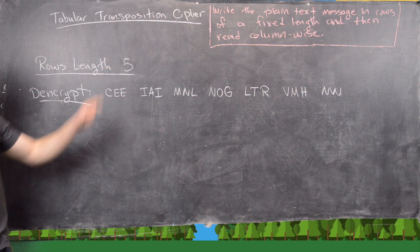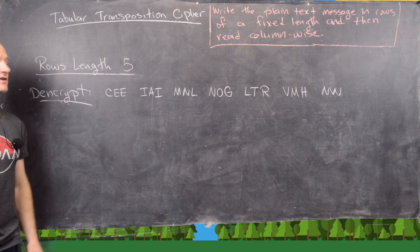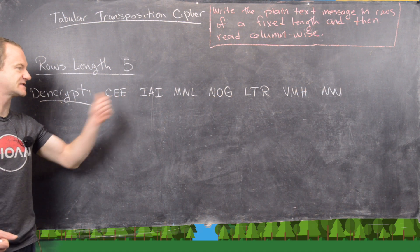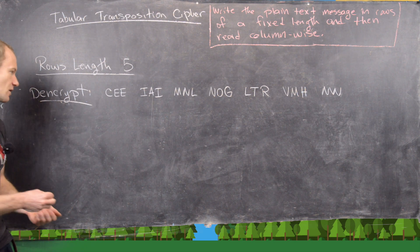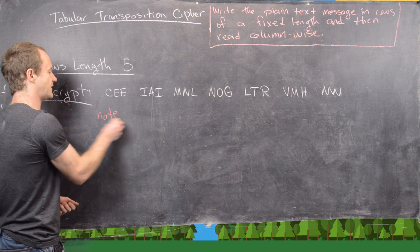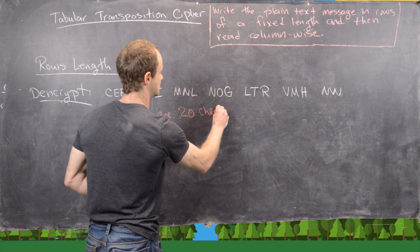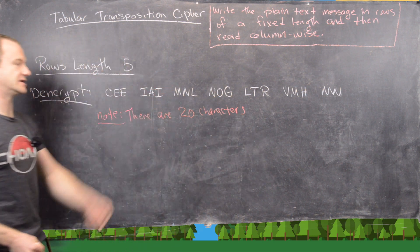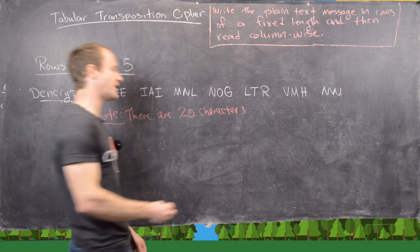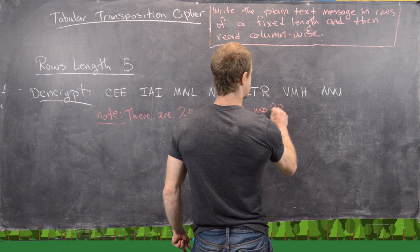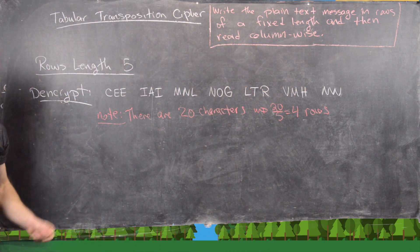Now we want to decrypt a message, assuming we originally had rows of length 5. There are 20 characters total, so 20 divided by 5 equals 4 total rows, which means our columns will have 4 entries each.